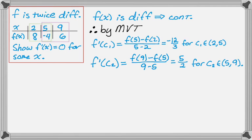And that's for c₂, which is an element of (5, 9). Okay, so now I've shown that f' is definitely negative somewhere, definitely positive somewhere else. So now I'm going to use that information to show that f' must have equaled 0. So to do that, I'm going to kind of invoke the Intermediate Value Theorem.